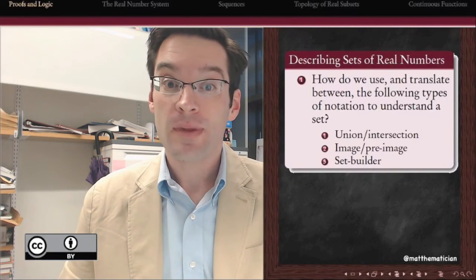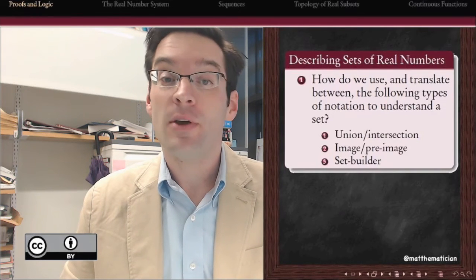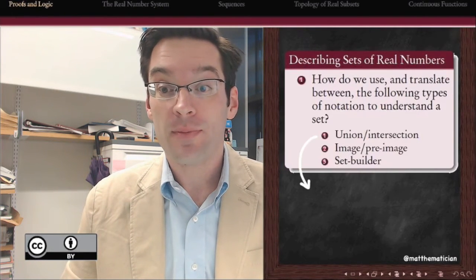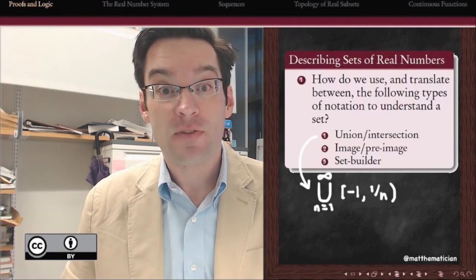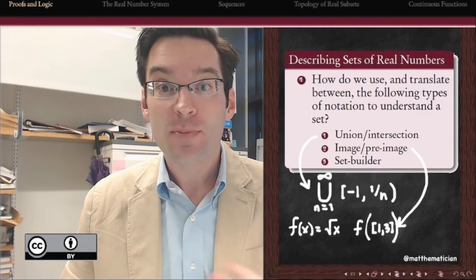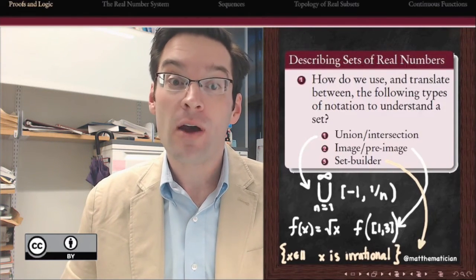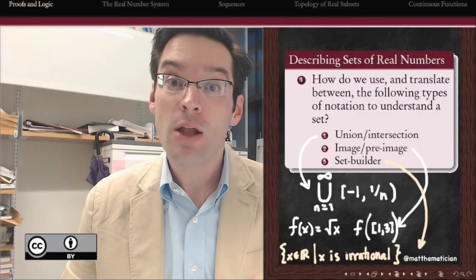If we're going to get to know the real numbers, we're going to need to know how to talk about sets. We'll use three types of notation to write sets of real numbers: as unions or intersections of intervals, as images or pre-images of functions, and in the most expressive way of all, in set builder notation, where we can use our words. Let's take a look at how all of these work.